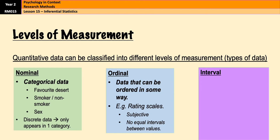Ordinal data is data that can be ordered in some way. For example, rating your enjoyment of something on a scale of one to ten is ordinal, because you can order people from who enjoyed it most to least. However, ordinal data is subjective — there are no equal intervals between values. So if someone rates enjoyment as two out of ten and another rates it four out of ten, we can't say the second person enjoyed it twice as much.